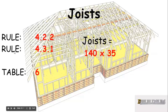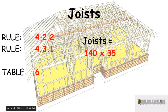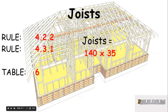So there we have rules 4.2.2 and 4.3.2, Table 6, and 140 by 35 joists is what we're going to use.